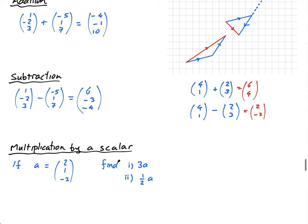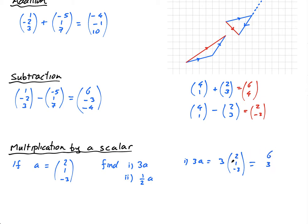If a is this vector, find 3a. This is straightforward. If a is 2, 1, negative 3, then 3a equals 3 times this. I can put the 3 outside like this, or I can multiply inside the vector. So 3 times 2 is 6, 3 times 1 is 3, 3 times negative 3 is negative 9.